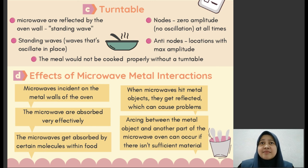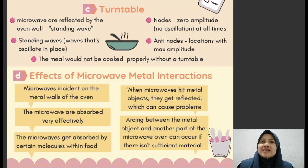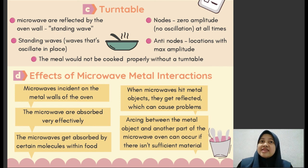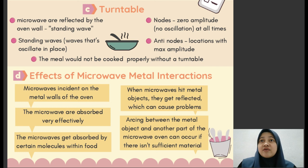Third, the metal inside a microwave oven reflects the microwaves and focuses them on the food to be cooked. The microwaves get absorbed by certain molecules within the food, such as water molecules, which absorb microwaves and generate heat. Fourth, metals such as forks, knives, and spoons are great conductors of electricity because they contain a lot of freely moving electrons. When microwaves hit metal objects, they can reflect them, which can cause problems. Fifth, if there is insufficient material in the microwave oven to absorb the reflected microwaves, arcing between the metal object and another part of the microwave oven can occur.